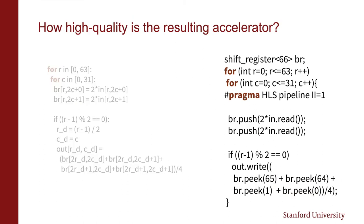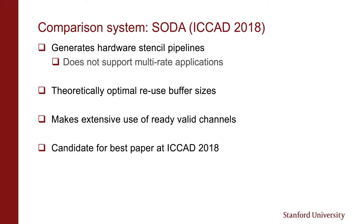We evaluate our accelerators in two parts: first comparing unirate application performance, then looking at multirate applications. For unirate pipelines, we compare to SODA, published at ICCAD 2018. SODA is specialized for unirate pipelines and doesn't support upsample and downsample, but for stencil pipelines it produces theoretically optimal reuse buffer sizes, though it makes extensive use of ready-valid channels. It was a candidate for best paper at ICCAD 2018.